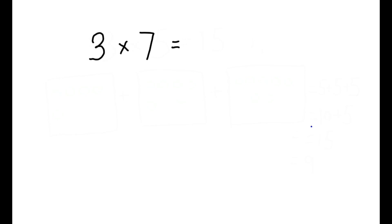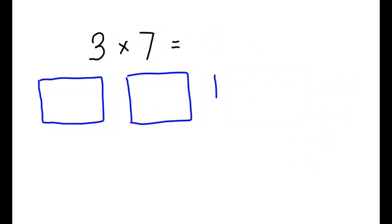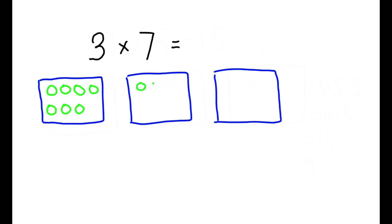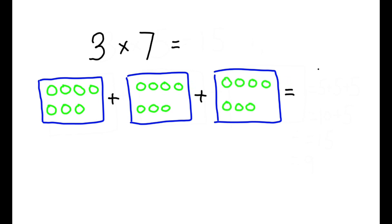3 times 7 means there are 3 boxes, and each box has 7 circles, and the answer is the total number of circles, which is 7 plus 7 plus 7, which equals to 14 plus 7. The answer is 21.